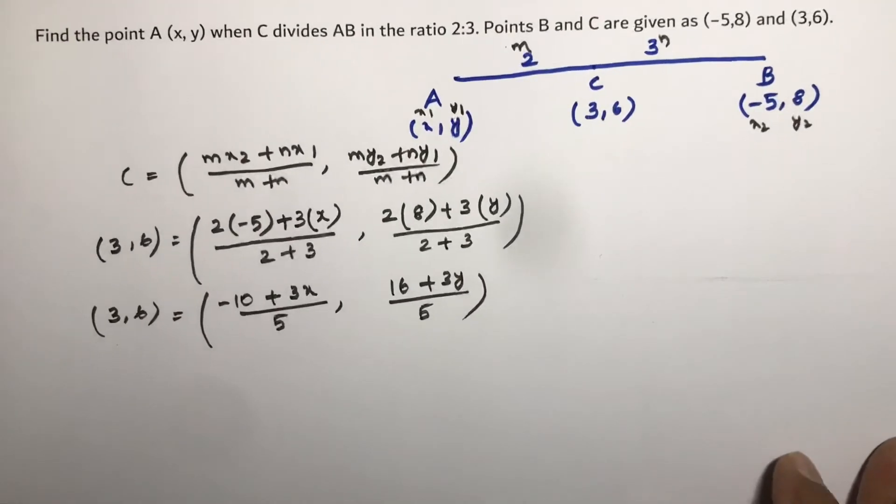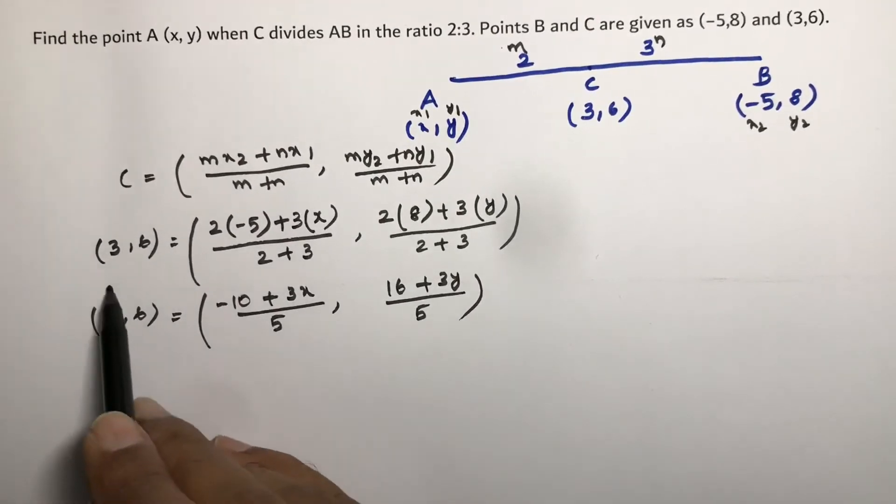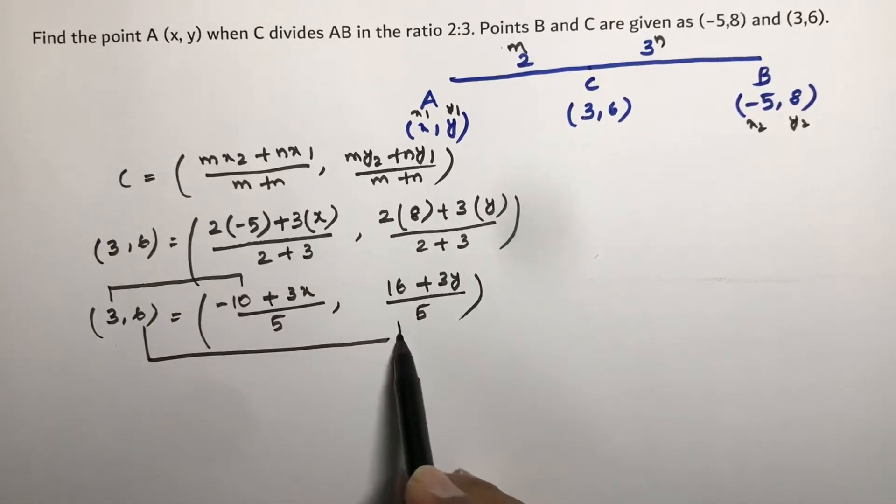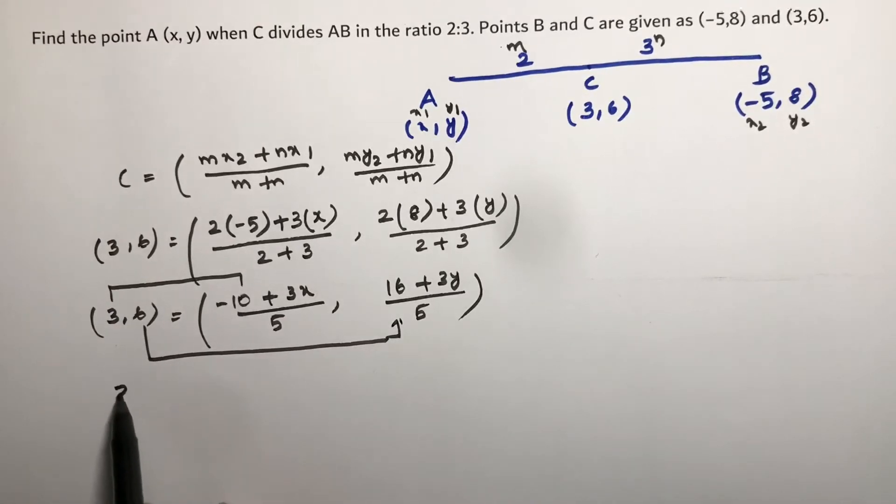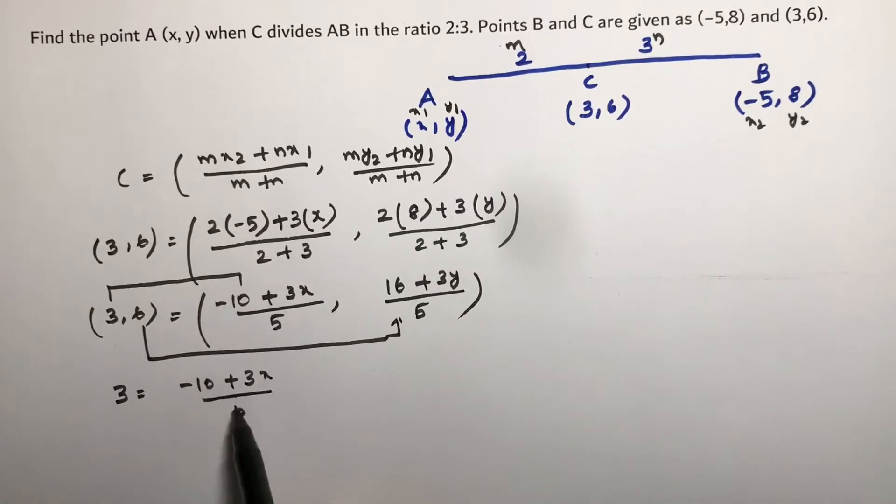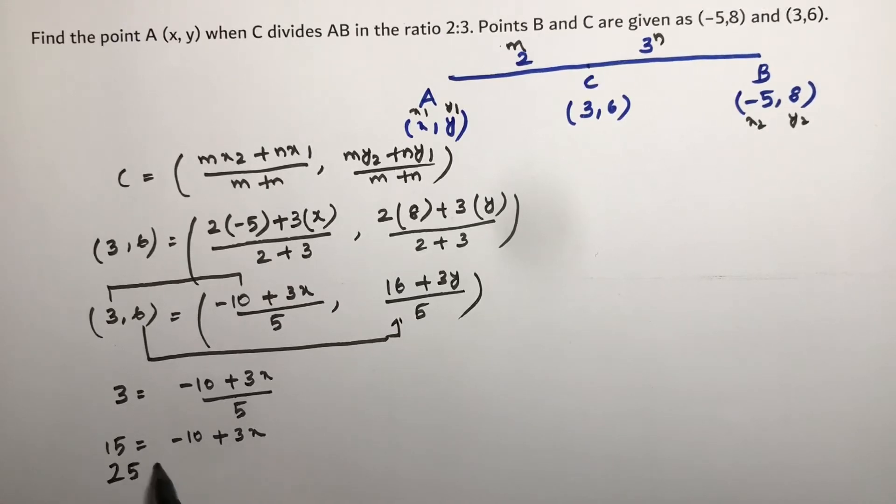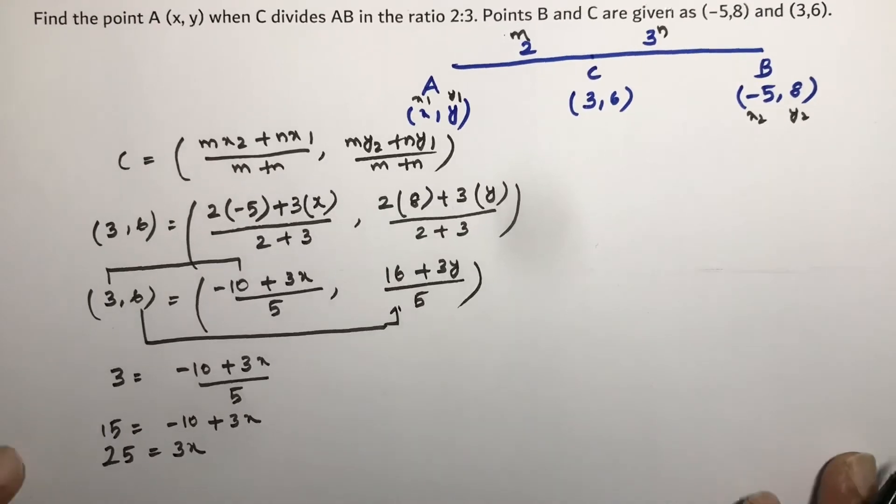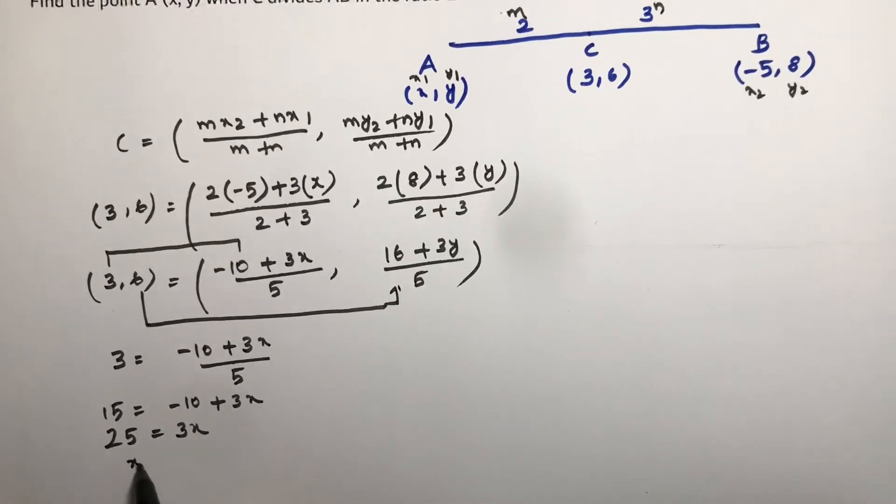Now on comparing abscissa with abscissa and ordinate with ordinate, 3 equals minus 10 plus 3X by 5. So 5 into 3 is 15 equals minus 10 plus 3X. On transposing, 15 plus 10, 25 equals 3X. Therefore the value of X is 25 by 3.